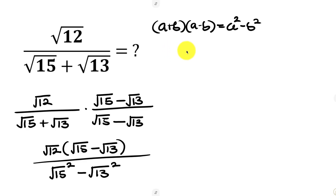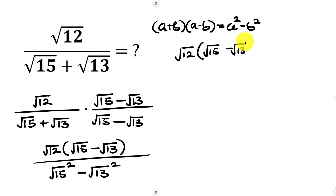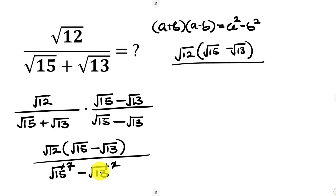So simplifying further we have the square root of 12 times the square root of 15 minus the square root of 13, all over. Notice that the square cancels the square root, and the square cancels the square root. So we are left with 15 minus 13, which is equal to 2.